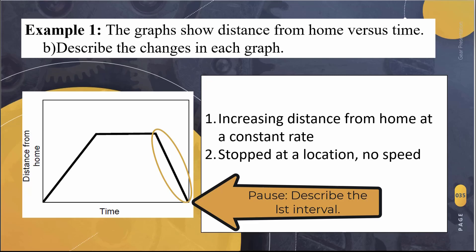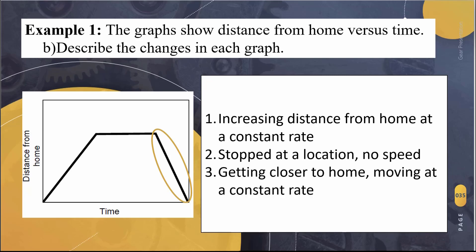And then the last one, what happened at the very end? Getting closer to home, moving at a constant rate and what happened at the very end? I actually got home, right? Because I ended right here. So I'd even add that to it, that I got home. So I'd actually even add that, until I reached home, to my explanation.